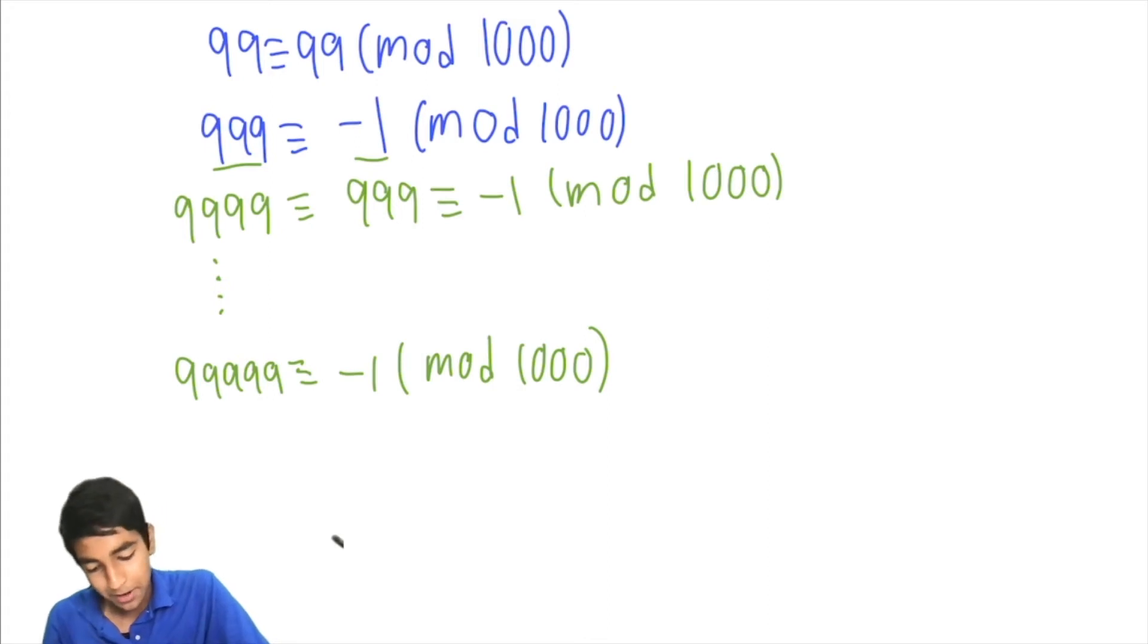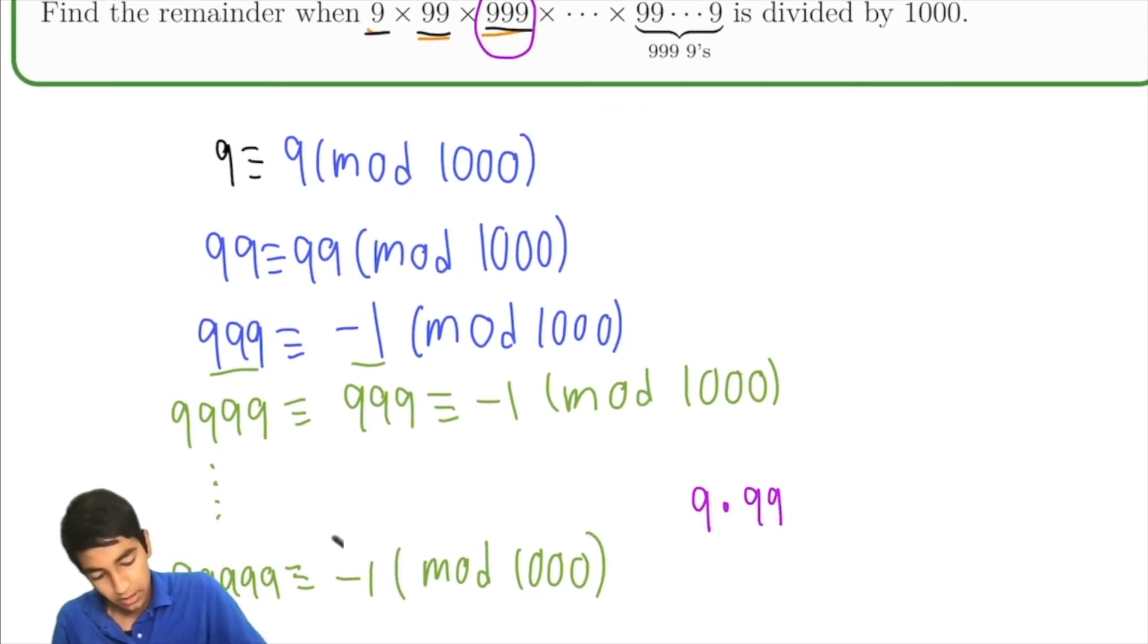The key thing is it's 9 times 99 times negative 1 mod 1,000, times the next term which is also negative 1 mod 1,000, and so on. So how many of these negative 1s are we multiplying together? There's a total of 999 terms, right?